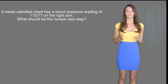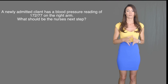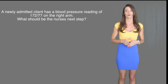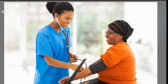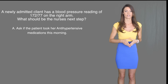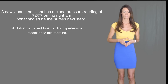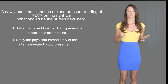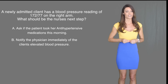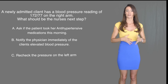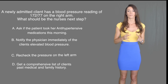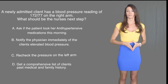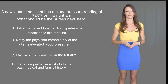Question number one. A newly admitted client has a blood pressure reading of 172 over 77 on the right arm. What should the nurse's next step be? A: Ask if the patient took her antihypertensives this morning. B: Notify the physician immediately of the client's elevated blood pressure. C: Recheck the pressure on the left arm. Or D: Get a comprehensive list of the patient's past medical history and family history.